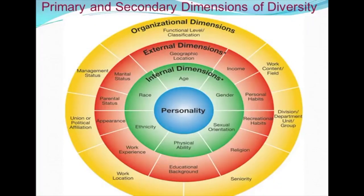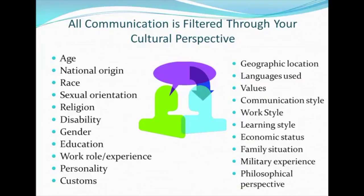We have both primary and secondary dimensions of diversity. Primary dimensions are characteristics that everyone is born with and that are visible and easy to identify, such as race and ethnicity. External dimensions of diversity are differences or characteristics that we acquire, change, or discard throughout our lives and that distinguish us from people who possess a different worldview. Examples of secondary dimensions are religion, educational background, marital status, and personal values. Each of us communicates in a manner filtered through our cultural perspective, which comes from both the primary and secondary dimensions of diversity.